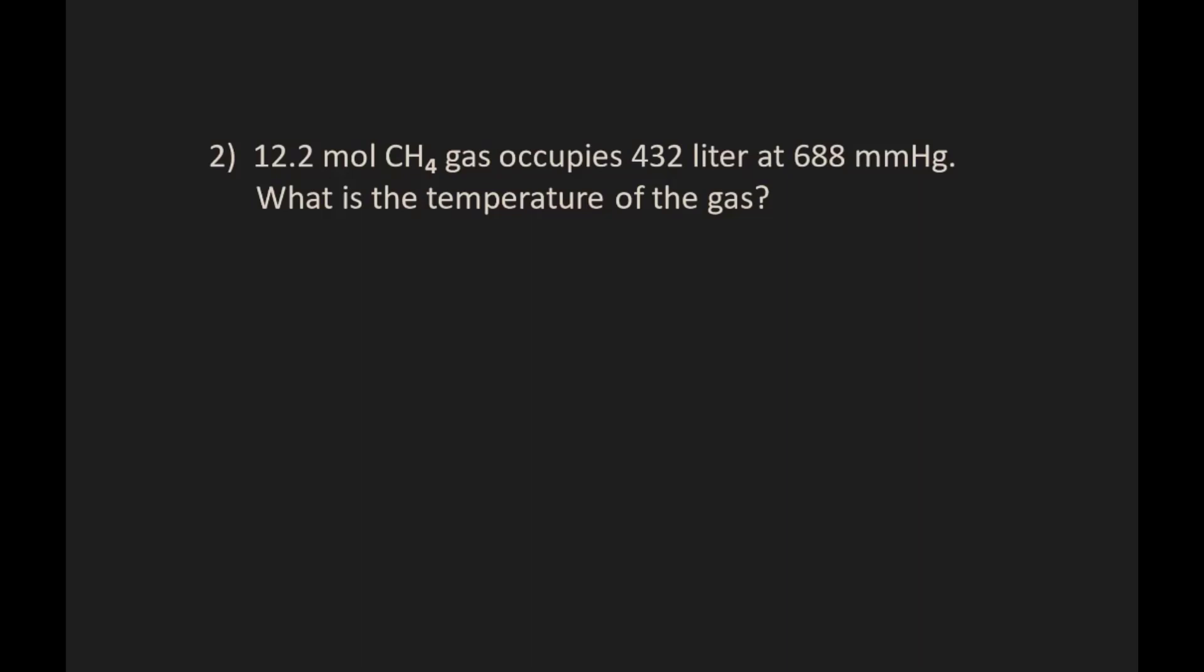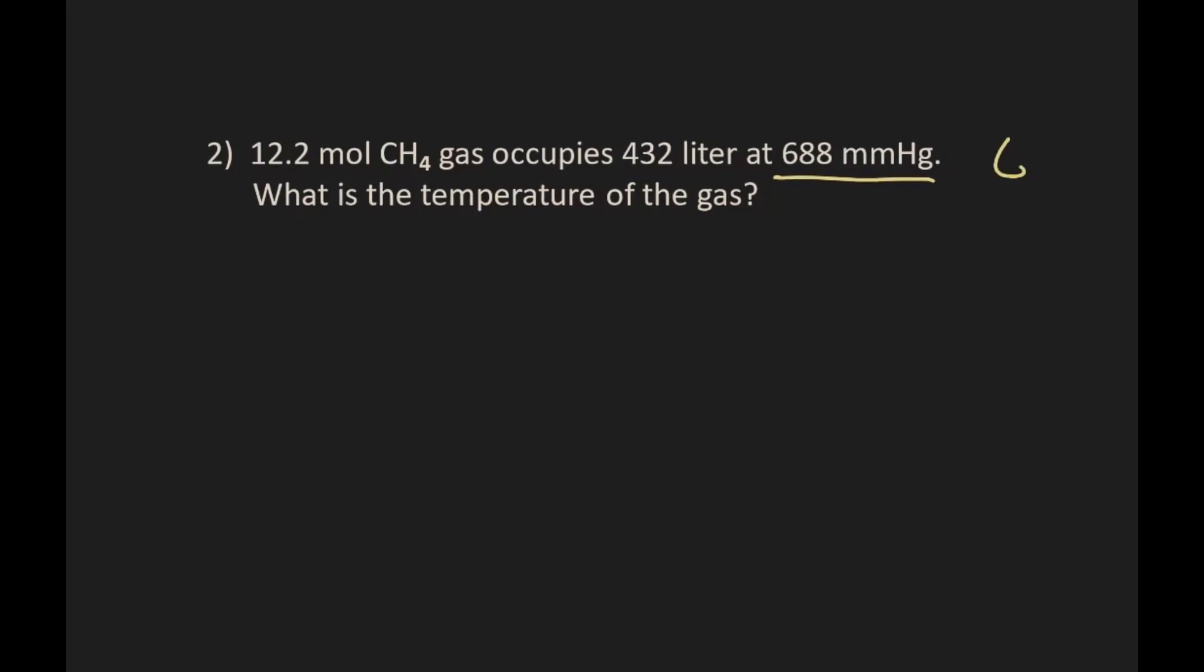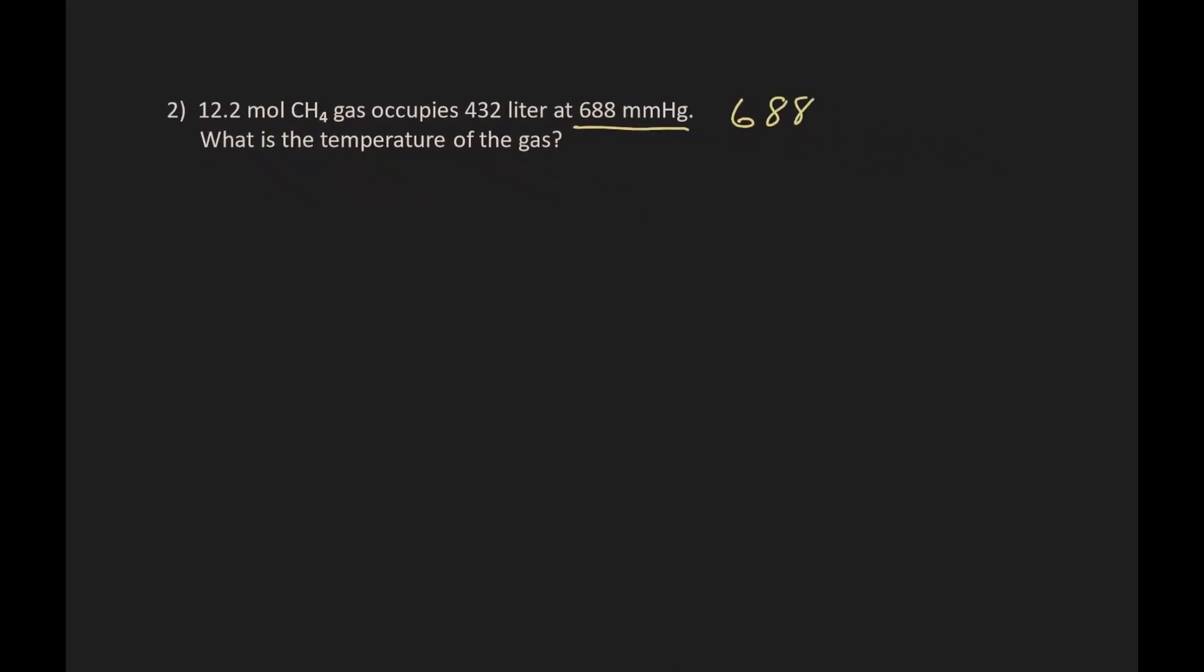You can either calculate a new R for millimeters of mercury or you could convert millimeters of mercury to atmospheres and use the R for atmospheres. So let's convert. You're setting up a simple proportion because we know that 760 millimeters of mercury equals one atmosphere, and so 688 millimeters of mercury over 760 equals x over one atmosphere.